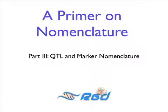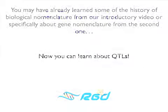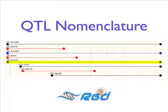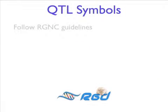This video is the third in a series of tutorials on biological nomenclature. The first video dealt with the history of biological nomenclature and touched on some reasons why standardization of nomenclature is important. The second gave details about gene nomenclature. This video covers nomenclature of quantitative trait loci, or QTLs. As far as the nomenclature of QTLs in RGD is concerned, we follow the guidelines compiled by the Rat Genome and Nomenclature Committee.